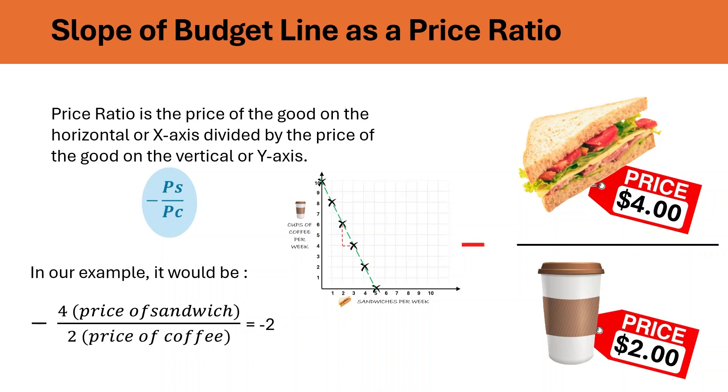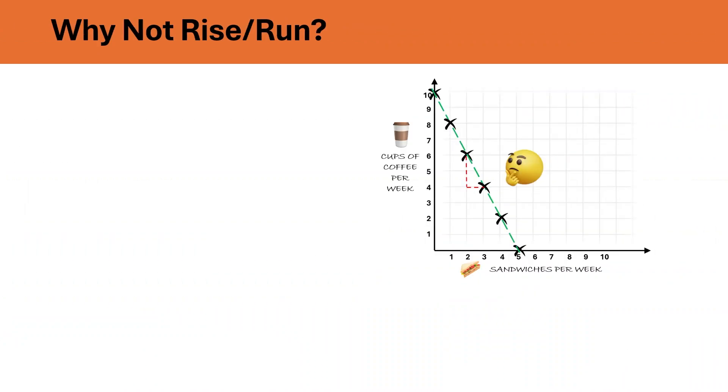Now, aren't you surprised? Did you notice something different? Intuitively, we always look at the slope as rise over run. And we might think that the slope should have been actually minus PC upon PS. But in the case of budget lines, it is run over rise, something you must pay attention to. This is something you need to be careful about while preparing for your exams.